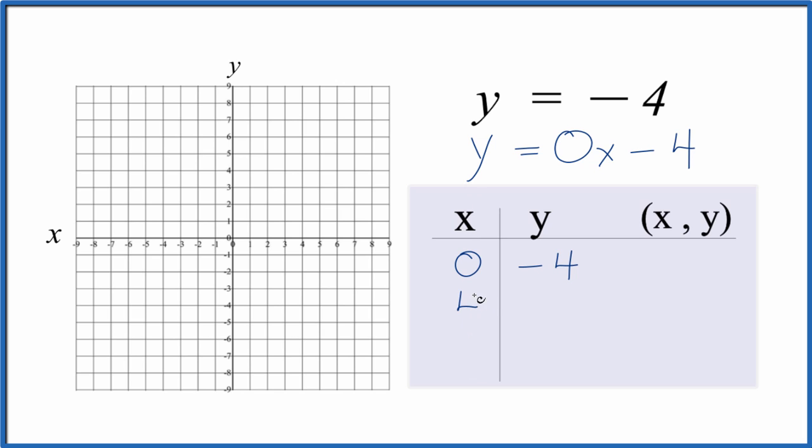And these are just numbers I'm making up here for x. Let's try 4. If I have 0 times 4, that's 0. So y is still negative 4. And for any value we put in for x, we're going to have y equals negative 4.